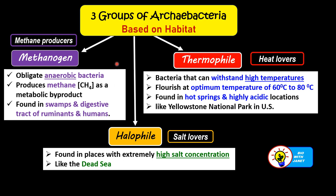The three groups of archaebacteria are classified based on the habitat or extreme environment they live in: methanogens or methane producers, thermophiles or heat lovers, and halophiles or salt lovers.